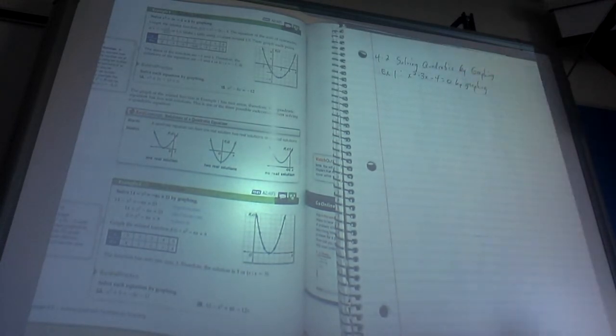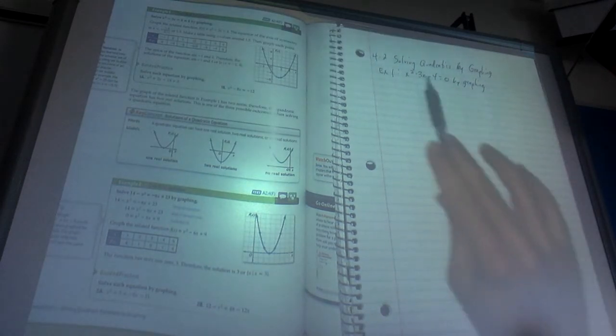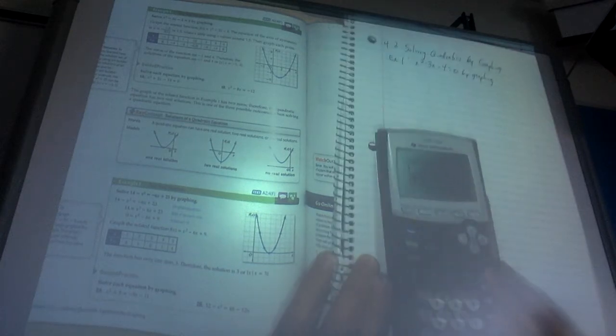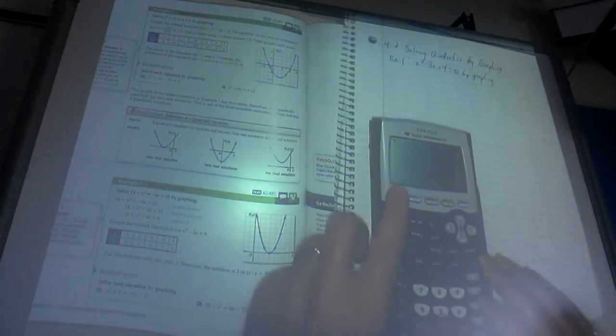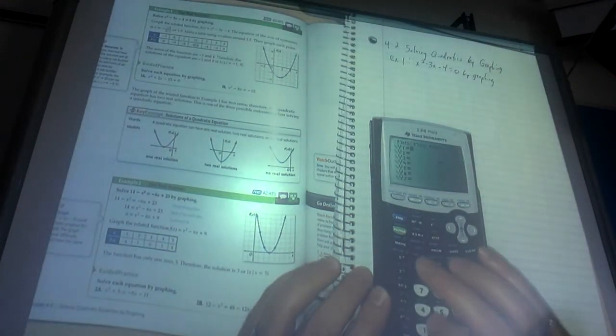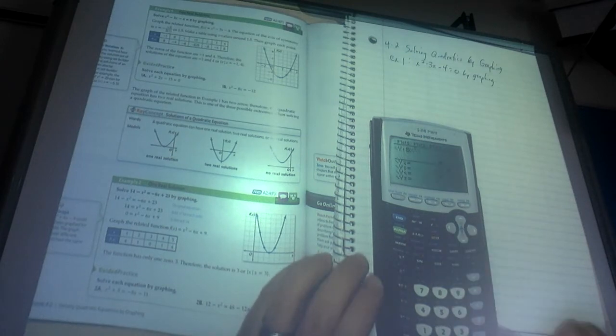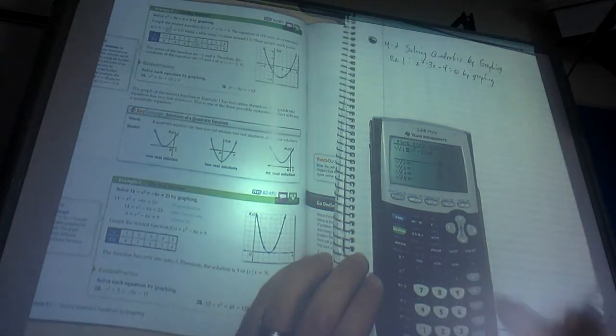One thing to make sure, it does have to be in standard form, so everything has to be on one side of the equal sign, or you have to have it equal to 0. We're going to go to the calculator, and we're going to plug it into y equals, and I'm going to go x squared minus 3x minus 4.